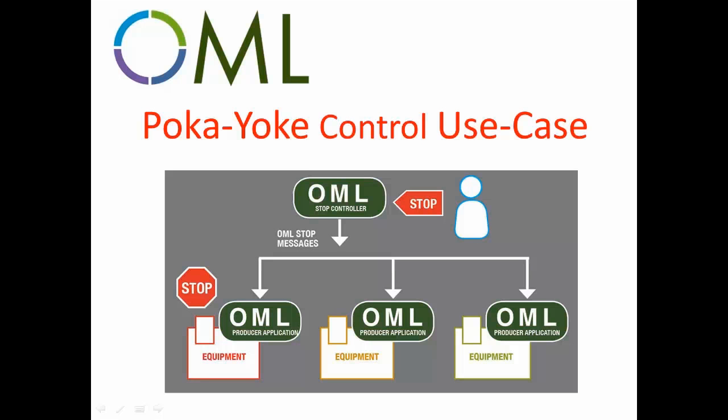The principle behind the POCOIO control is to ensure that processes are not allowed to operate when the operation is likely to result in a defective or incomplete product.